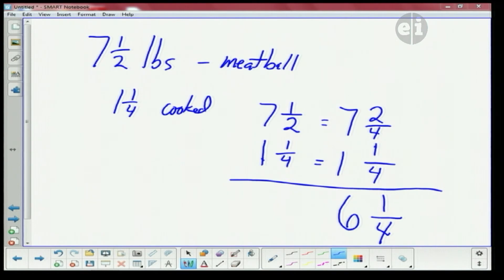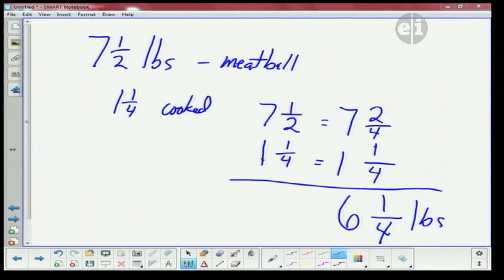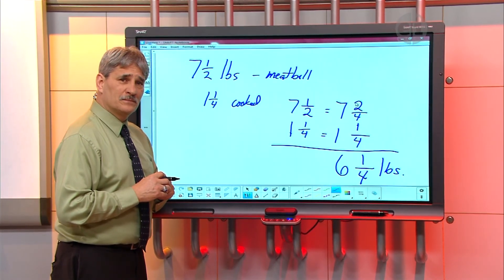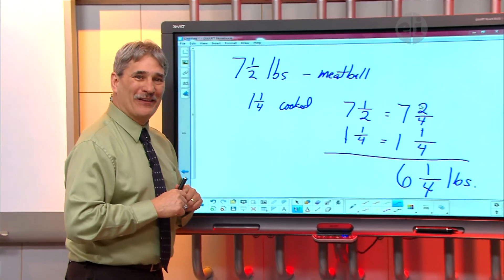All right, so what does he have left? And because this was a word problem, we should label it, right? So what he's left with is six and a quarter pounds of meatballs that he can freeze, right? All right, this is making me hungry, I haven't had dinner yet. You did a great job, thanks for calling.